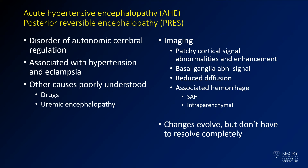There are a number of drugs which can cause PRES as well. The imaging findings you typically have are these patchy cortical signal abnormalities. You can have abnormal diffusion associated with these areas. You can have small amounts of hemorrhage. Subarachnoid and intraparenchymal hemorrhage is rare per the literature, but I've seen it on a number of occasions. Some hemorrhage should not exclude this diagnosis. These changes will evolve, but they don't necessarily resolve completely.